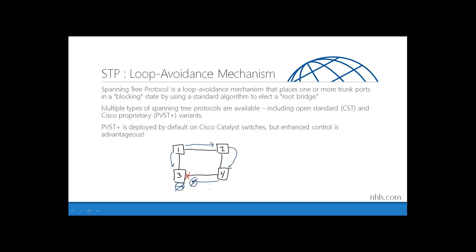There are multiple types of spanning tree protocols. Spanning tree originated from the IEEE as an open standard called CST, Common Spanning Tree. Cisco improved upon it with PVST+, Per VLAN Spanning Tree. Rather than putting an interface in a full-time blocking state, PVST+ allows interfaces to be blocking for some VLANs while forwarding traffic for others, more adequately utilizing bandwidth. The good news is that PVST+ is deployed automatically on Cisco Catalyst switches.